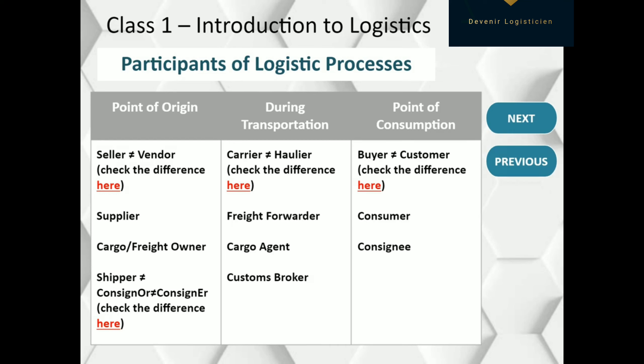We can also call our seller or vendor a supplier, which is more поставщик. Sometimes, and in some documents, we can call our seller грузовладелец — so here comes the word cargo owner or freight owner.